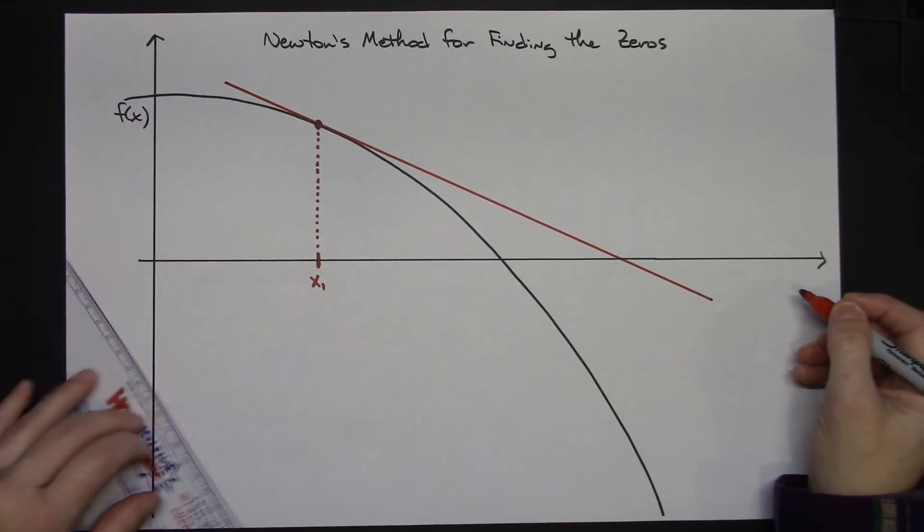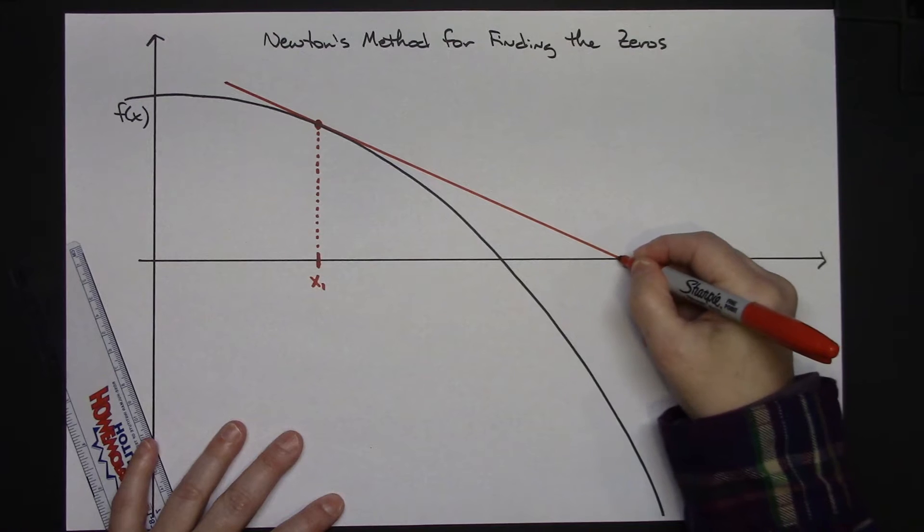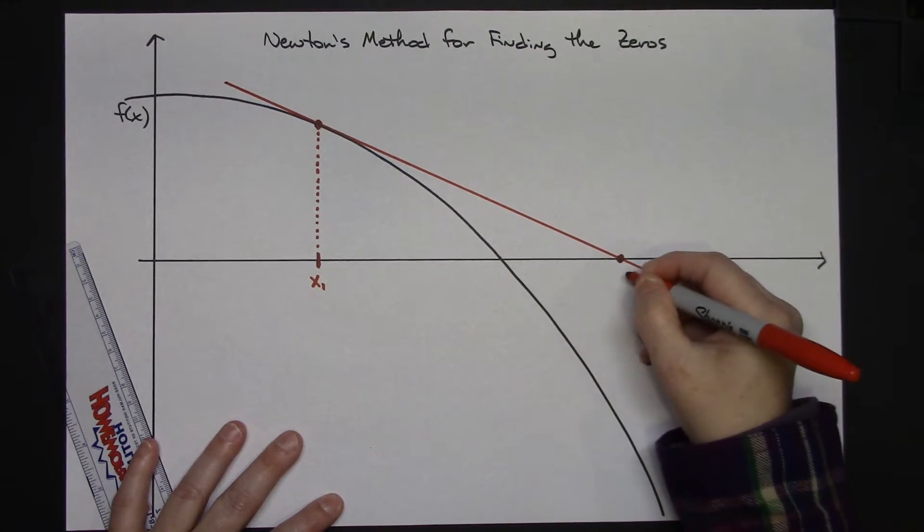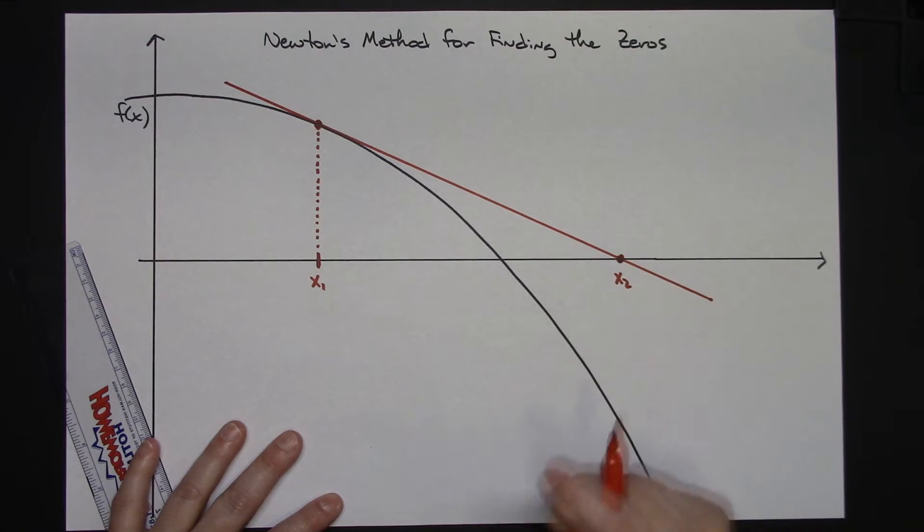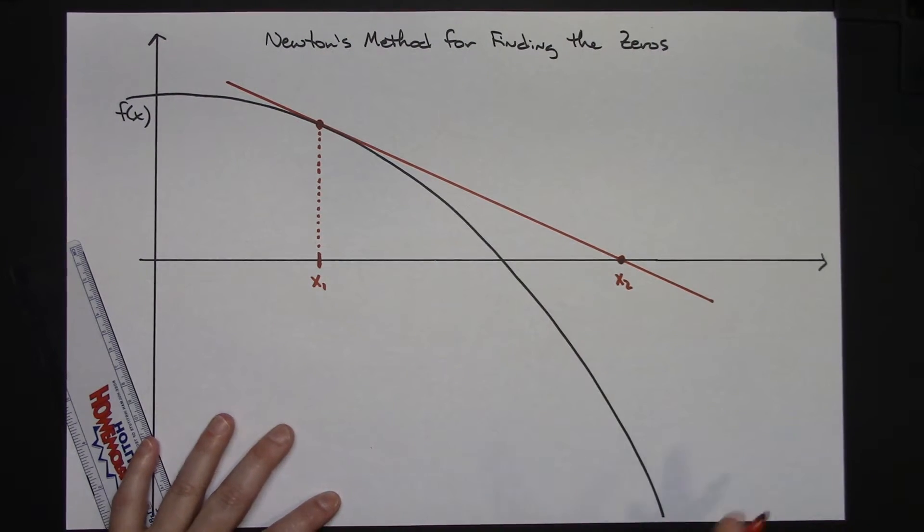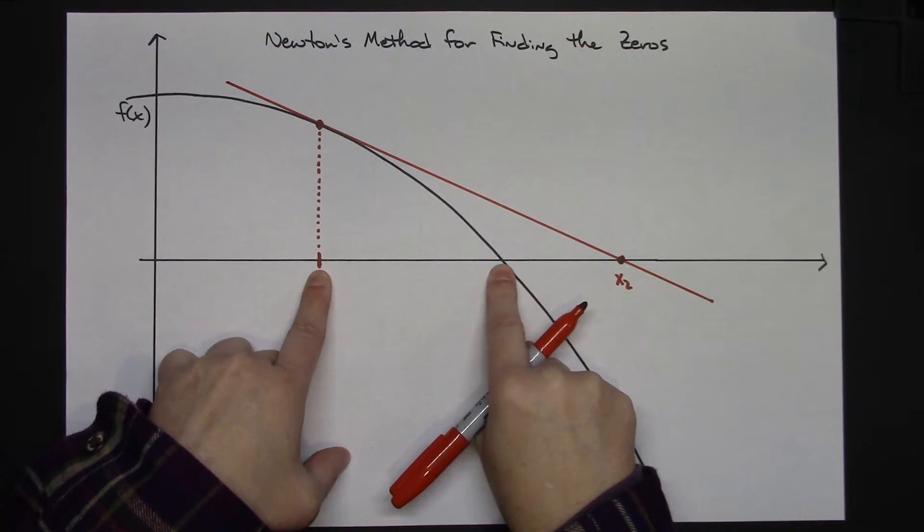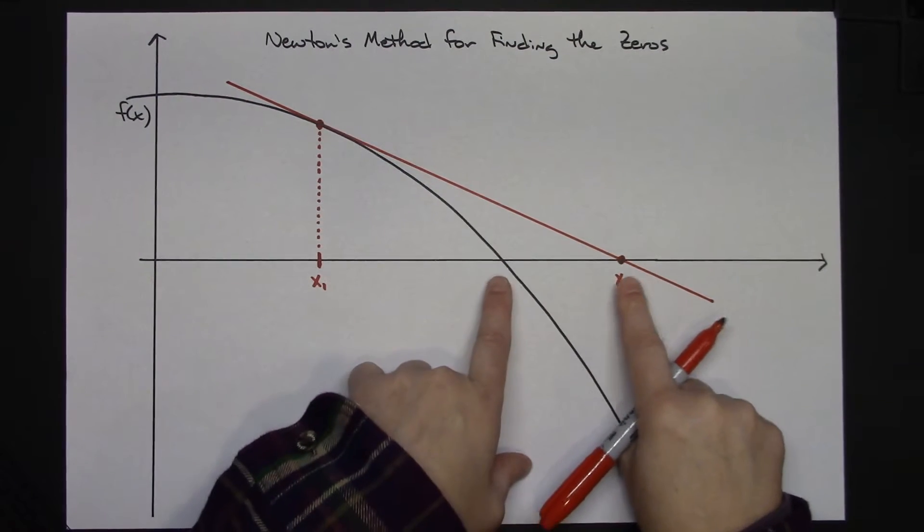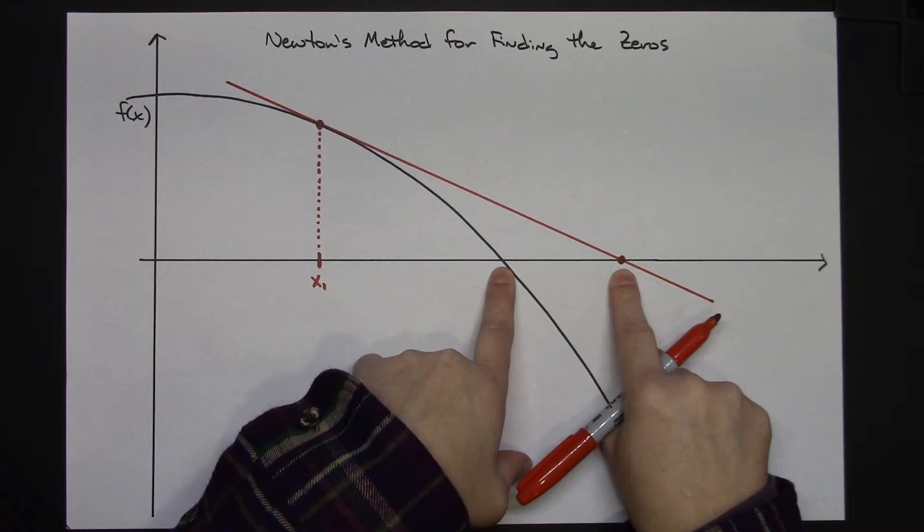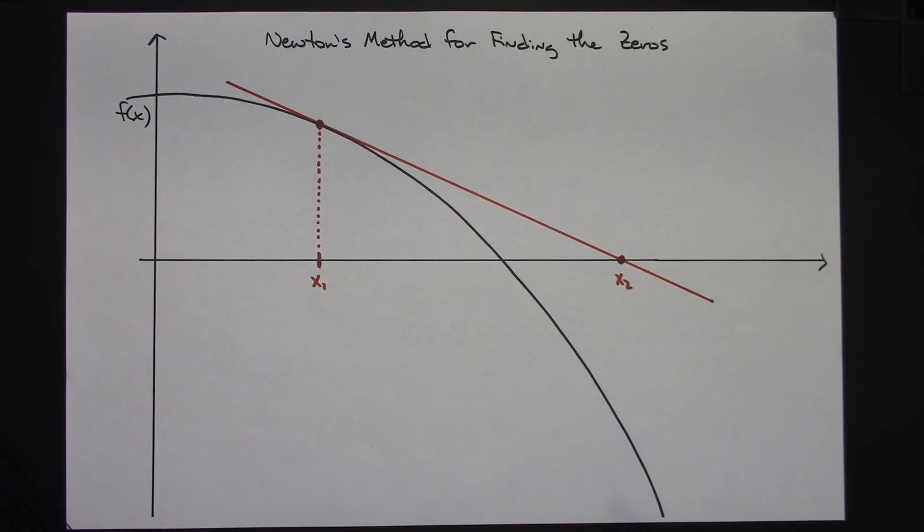And as soon as I do that then I have another approximation for where that zero is, and as you can see it is closer than my first one. My initial guess was pretty far away. After one iteration of the formula now I am closer to my zero.